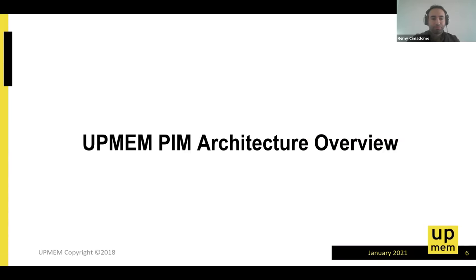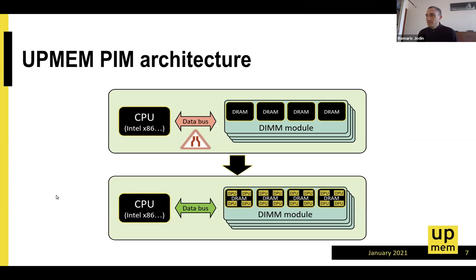What we are doing at UPMEM is trying to free the data bus. We start from applications that are mostly data-intensive, and by adding a DPU — the name of our processor inside the DRAM chip — we are capable of performing computation inside the memory chip, freeing the movement between CPU and DRAM.